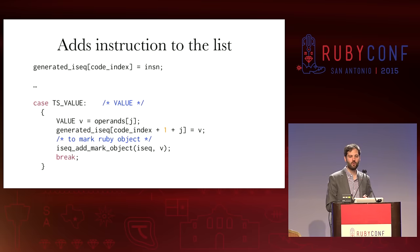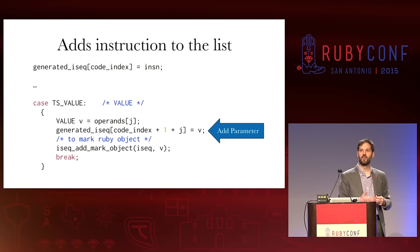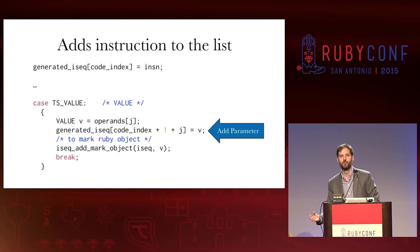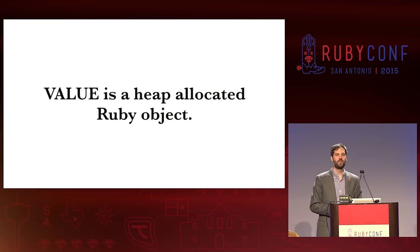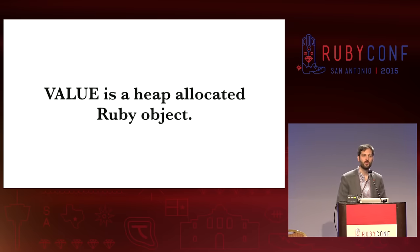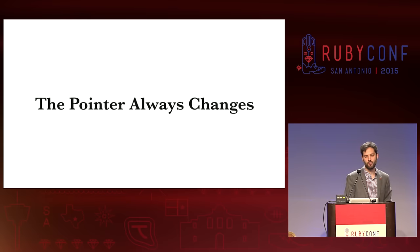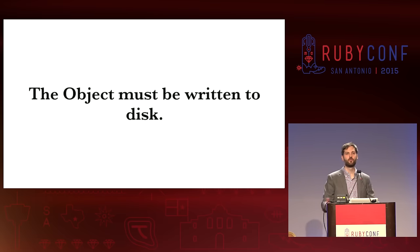Let's take a look at this step in the code where we stick our instruction into the generated list, and down here we stick our value in. That parameter — you may have noticed — it's actually a VALUE, which is a heap allocated object. It is a Ruby object. It is a pointer to a Ruby object. It is a heap allocated Ruby object, which means that the next time we actually run the program, that location is bad — it's gone away, it's different. Because the next time we allocate that string, it's going to be in a different location. The pointer always changes. We actually have to write that object to disk and then load it up later. It's not an impossible task — it's just something we have to overcome.